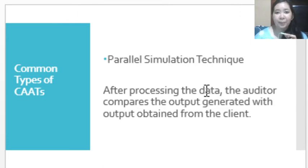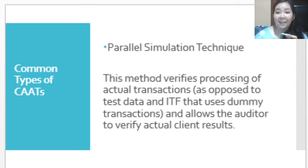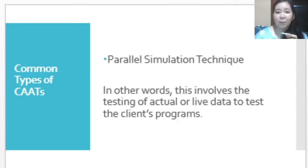In parallel simulation, the transactions are taken from the client itself — these are true transactions that occurred. The auditor tests if they were processed properly. This method verifies the processing of actual transactions, as opposed to the test data and ITF approaches which use dummy transactions. It also allows the auditor to verify actual client results and involves testing of live data to test the client's program effectiveness.